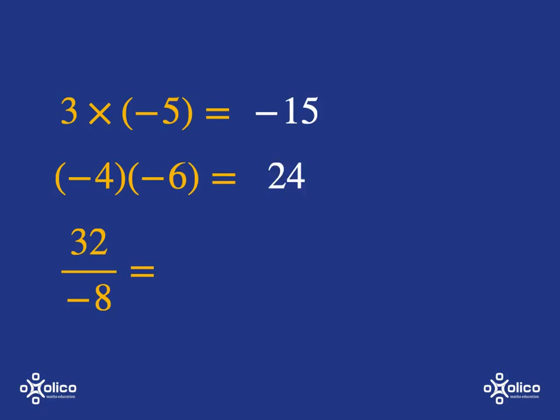And then in the last one, we've got a positive divided by a negative. So that's going to give me a negative. And 32 divided by 8 is 4. So that's going to be negative 4.